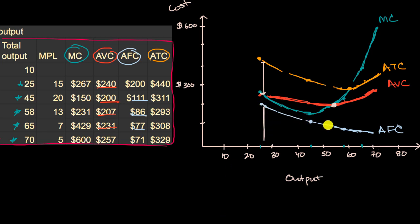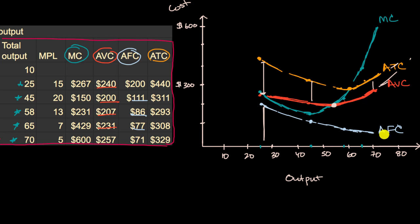Since your average fixed costs are asymptoting downwards, the difference between average total cost and average variable cost gets less and less over time — they will converge to each other as your average fixed cost gets closer and closer to zero. But now let's think about how these curves might be impacted if you have changes in productivity or cost.